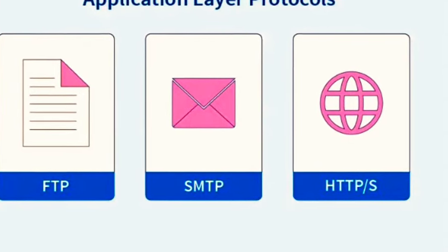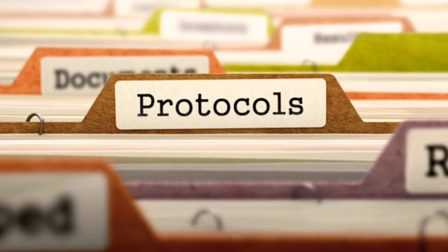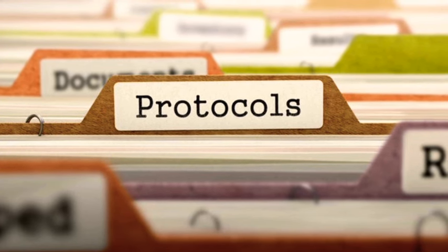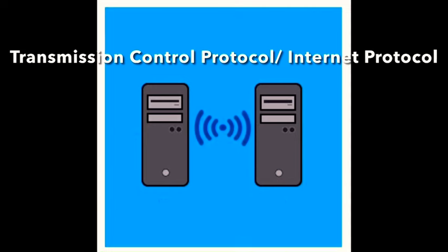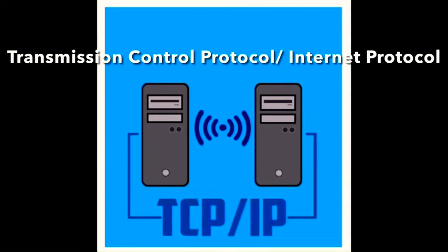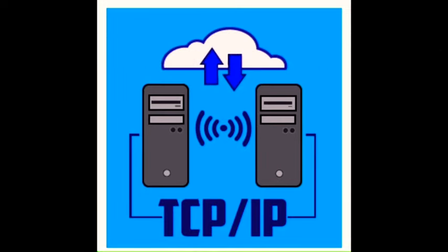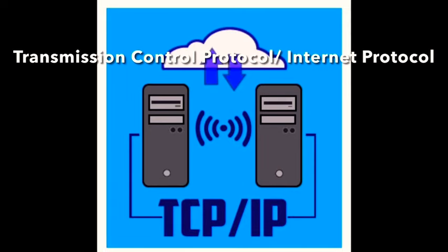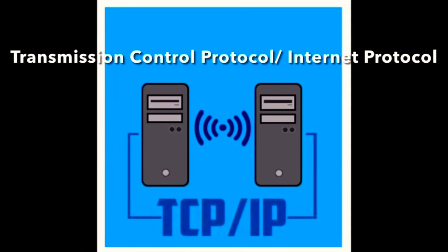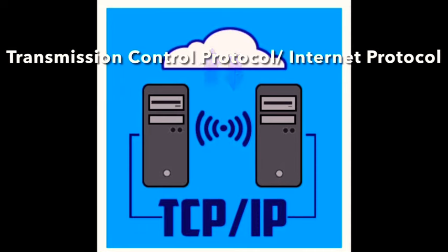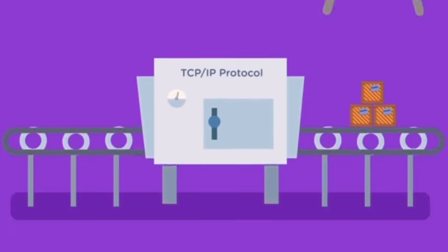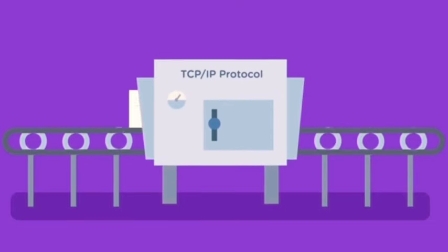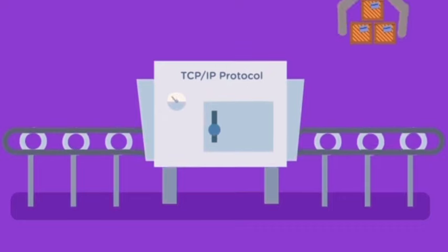So protocols are the foundation of any network communications, as we just saw, and there are many of them. However, one stands out in its significance and use, which is the TCP/IP model. TCP/IP stands for Transmission Control Protocol slash Internet Protocol, and it is a suite of communication protocols used to interconnect network devices on the internet. The TCP/IP model is a set of rules that governs how data is sent and received over the internet. At its heart, it's a framework consisting of four distinct layers, each with a specific role in the data transmission process.